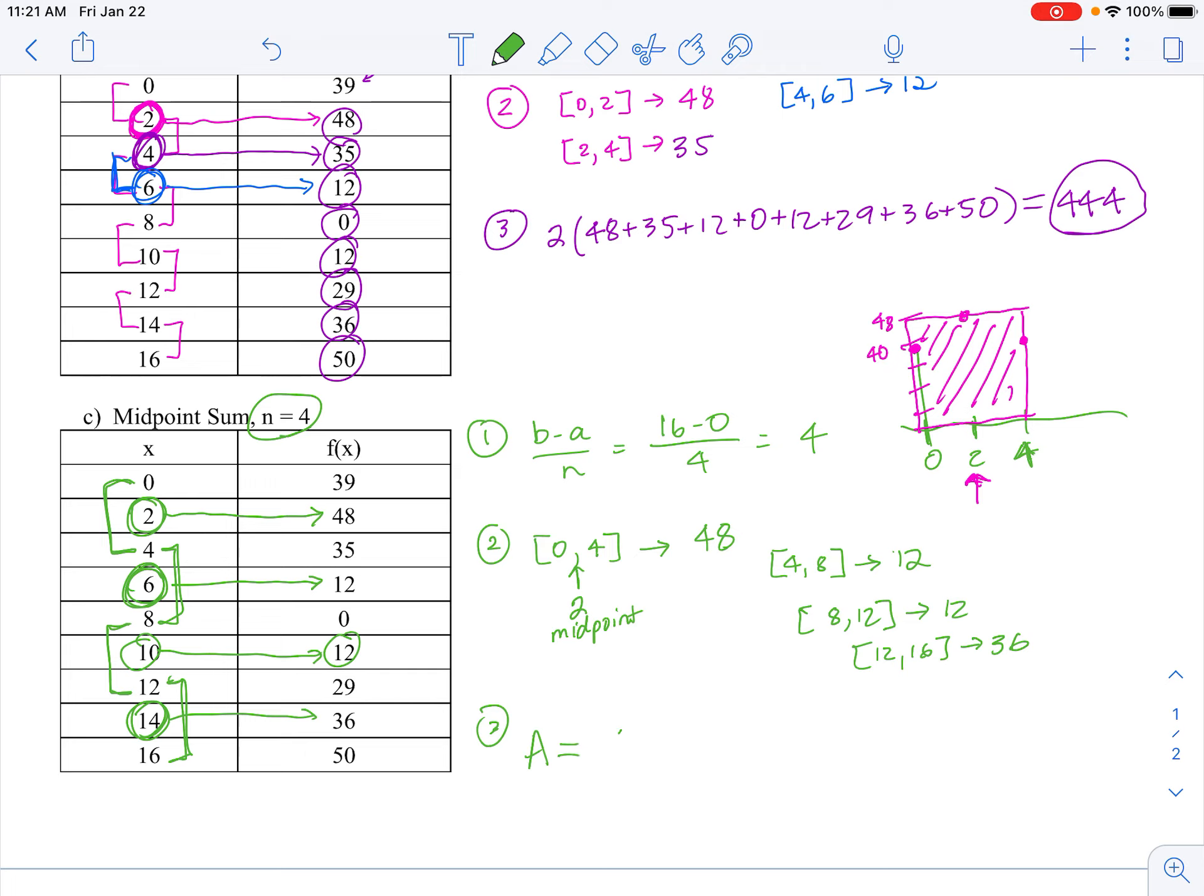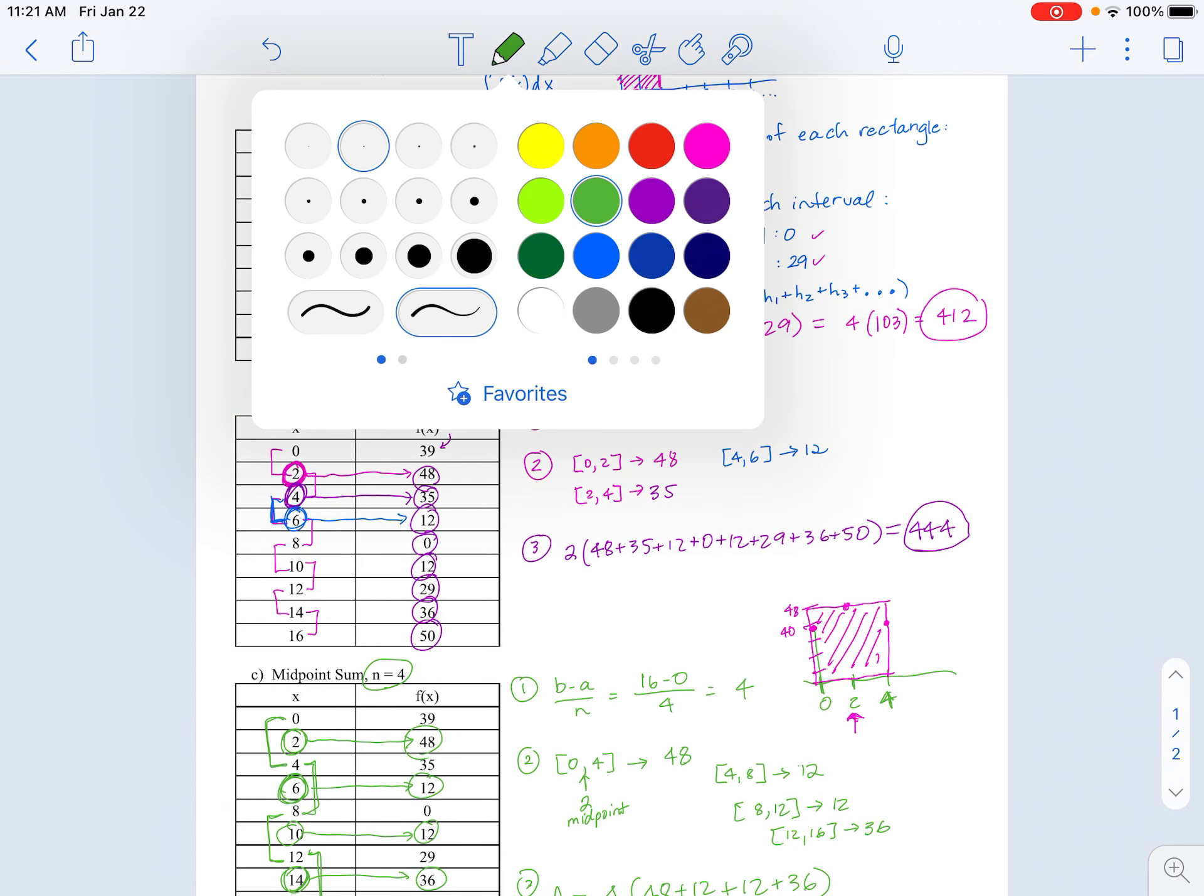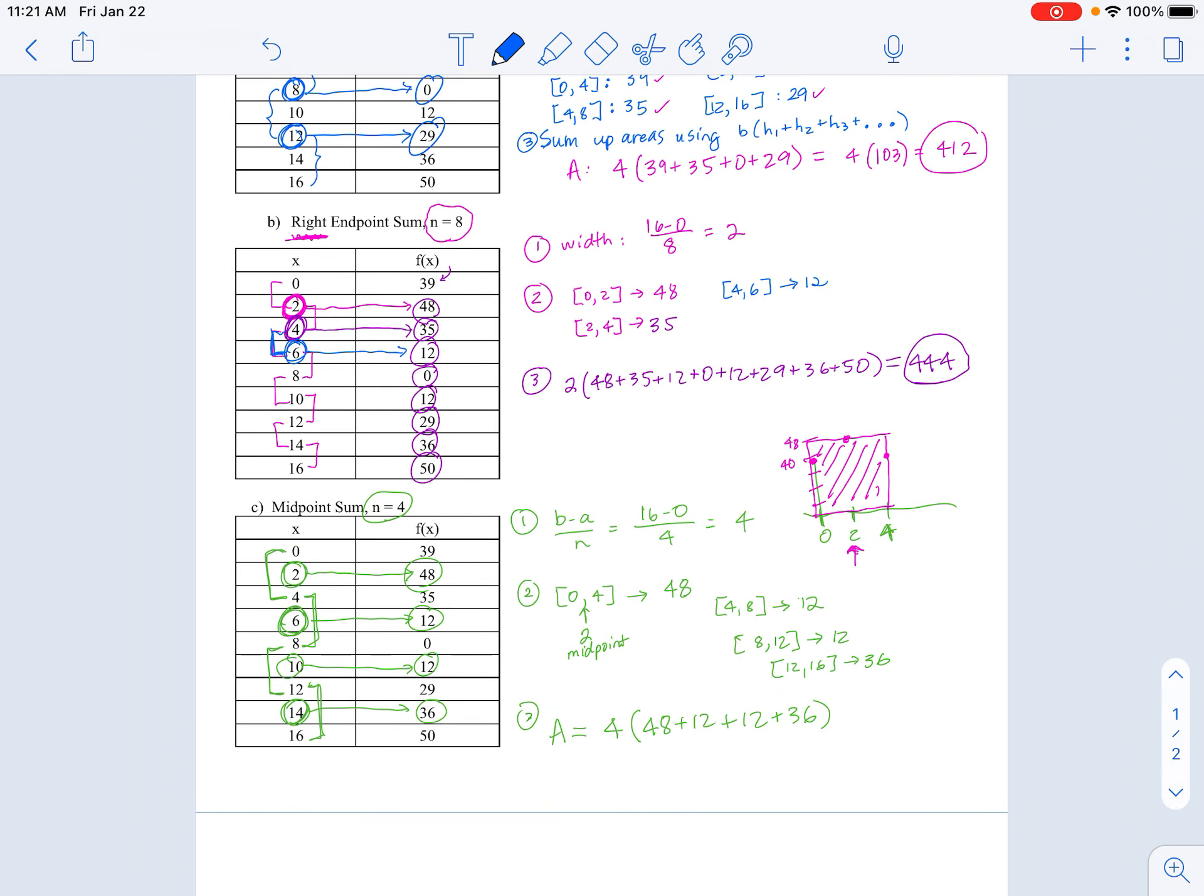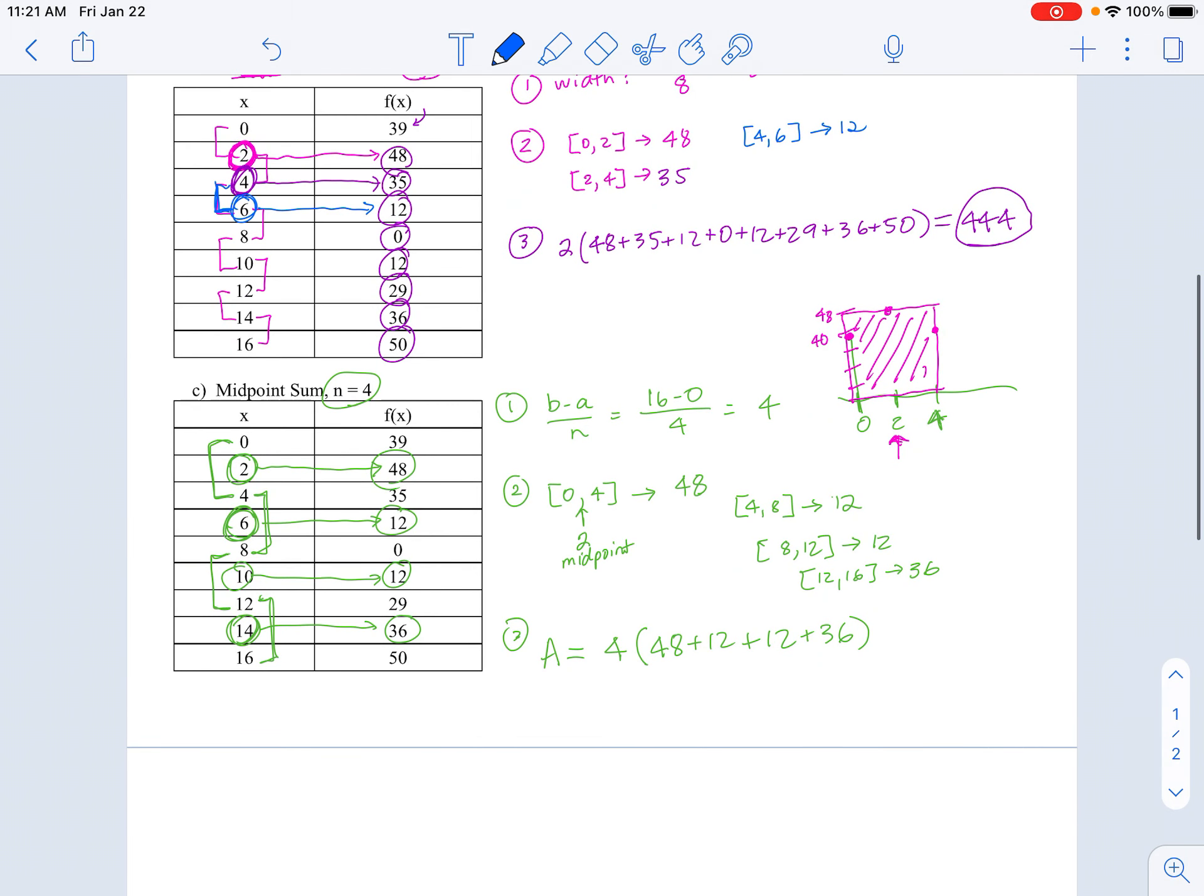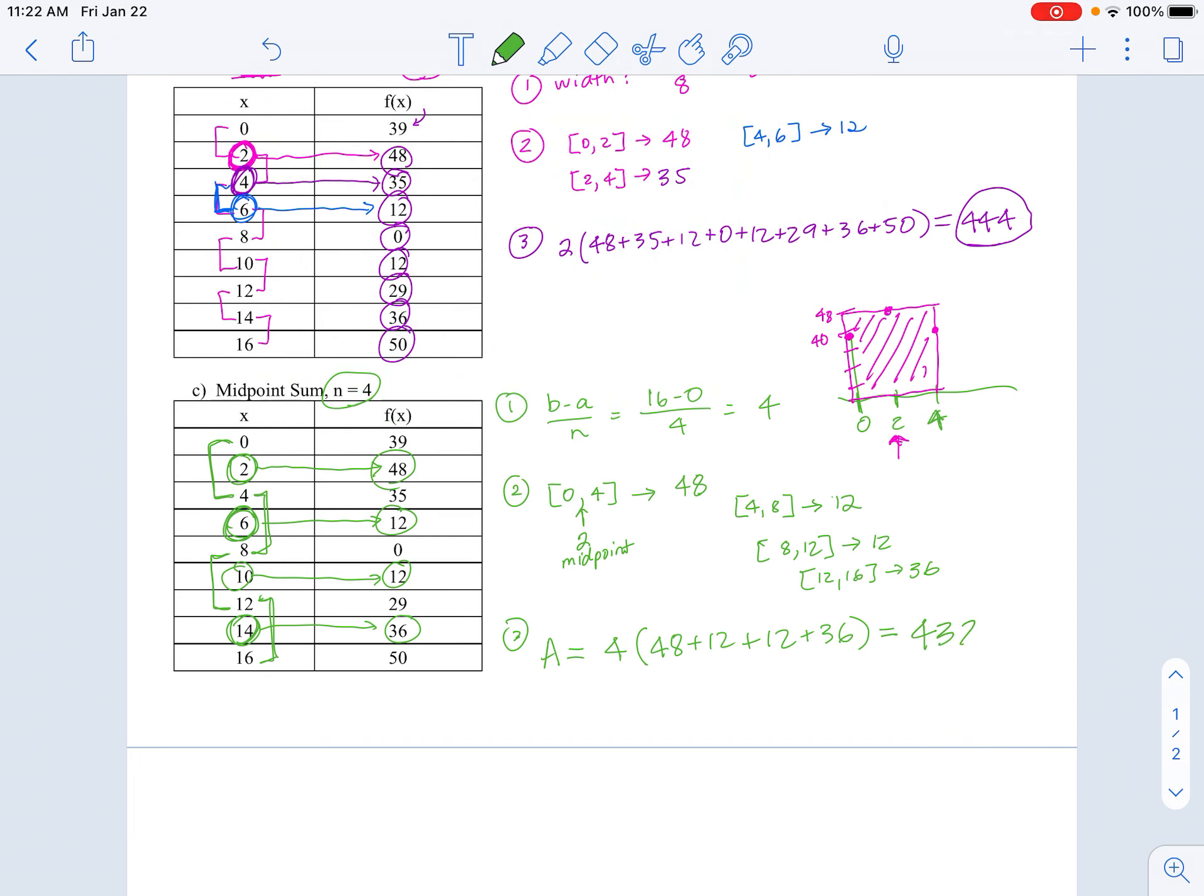So my summation in the end, my area approximation will equal 4, my base, times the sum of my heights, 48 plus 12 plus 12 plus 36. If you look back at the blue one, we used all these left values of each interval, then in the purple, we switched to right endpoints, and then for midpoints, we were in the middle of each interval. Total of this one is 432.